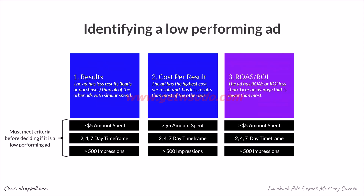Third, check return on ad spend (ROAS) or ROI. If the ad has a ROAS less than 1x, or an average lower than most others, it's likely a low performer. An ad under 1x return means you're losing money. However, before deciding if it's a low performer, it must meet the criteria: at minimum $5 amount spent, and you need to check performance at two days, four days, and seven days, because the ROAS, cost per result, and results change at each of those marks.